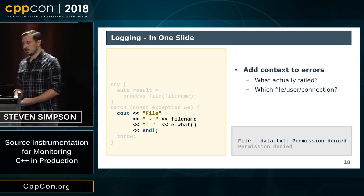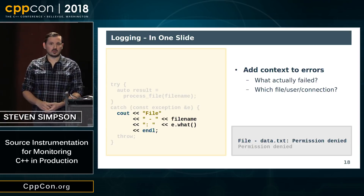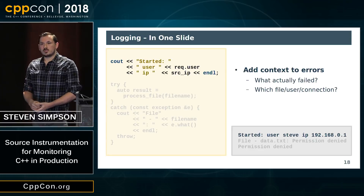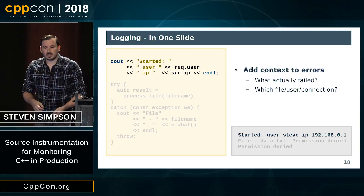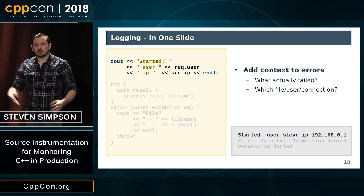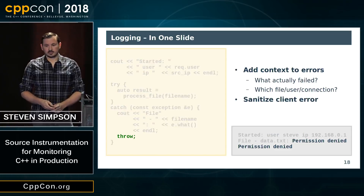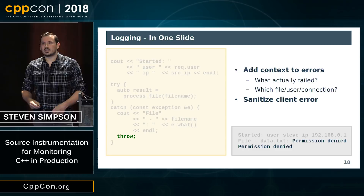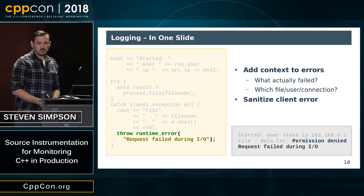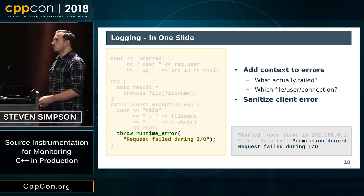So what we really need is a lot more information about this error. This 'permission denied' message is not nearly enough information for us to work out what's gone wrong. So we could add some context — maybe we use cout to print some extra information. Wouldn't it be useful to know which file we were accessing where the permission was denied? Maybe in addition we want some context about why this operation is even occurring: what user caused the operation, what connection the request came from. And then we can clean up this error message we're sending to the user through the exception, because the user doesn't care that permission was denied — what they care about is that their request failed.